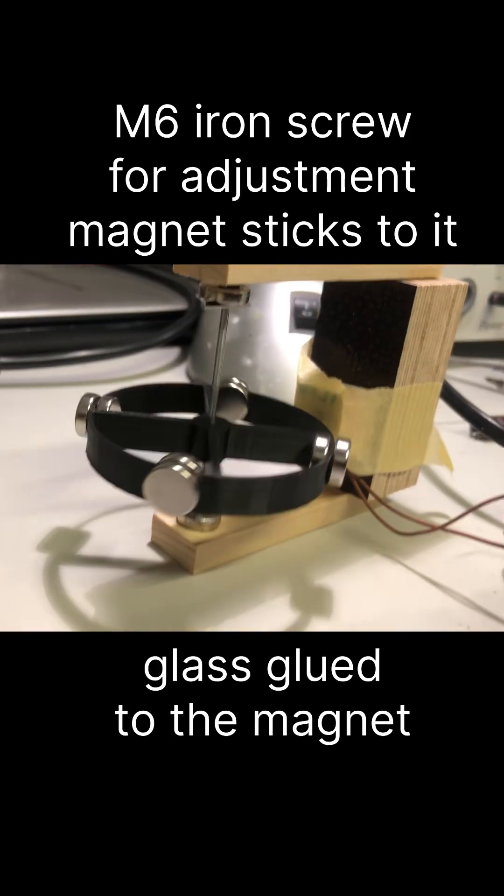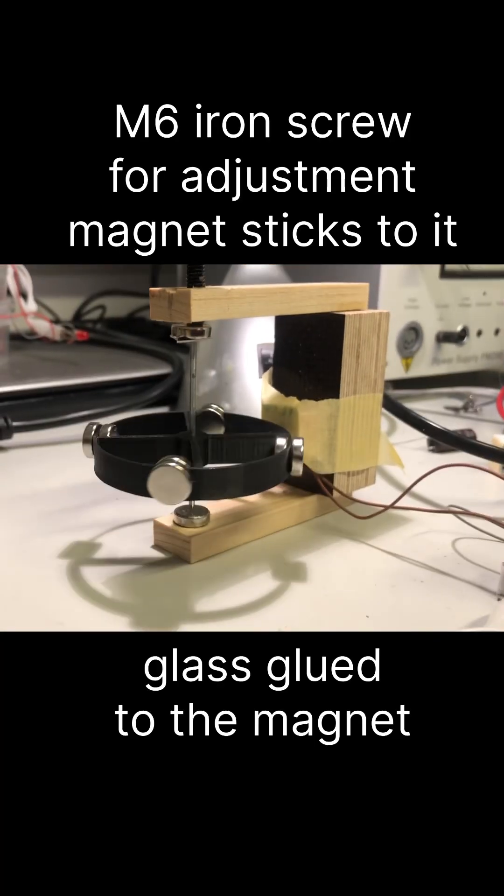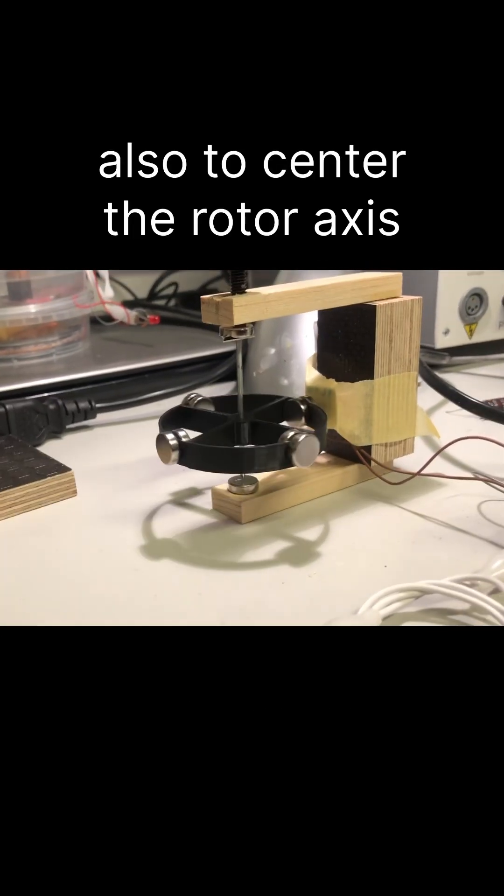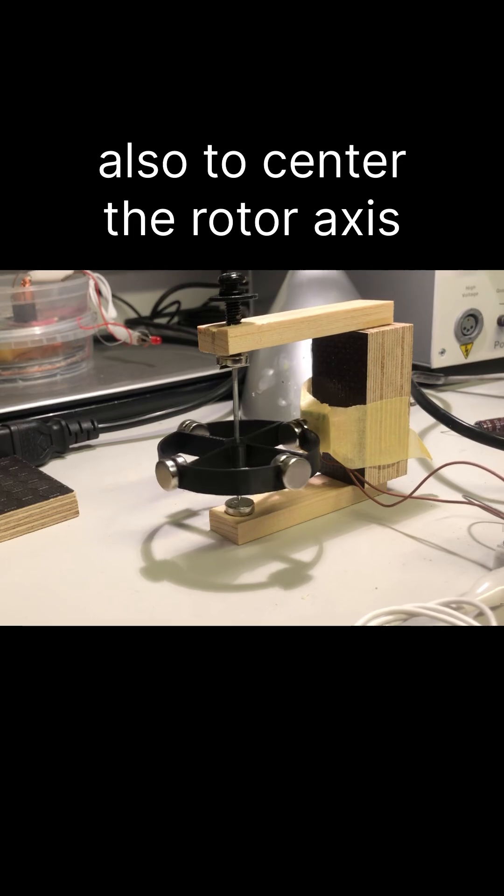The pulse motor is supported at the top and the force is adjusted by a screw. On the bottom is another magnet to compensate the forces.